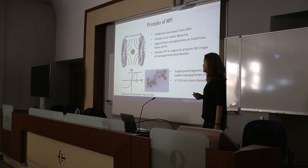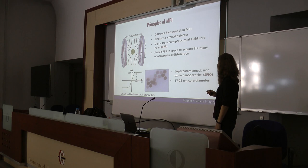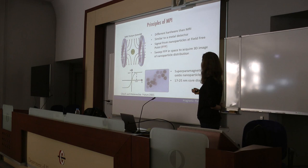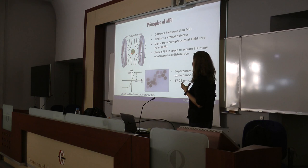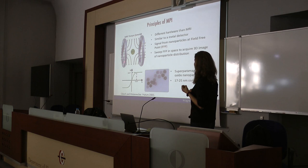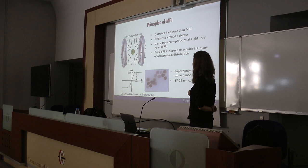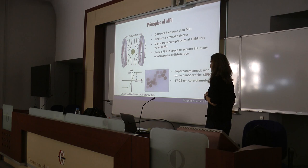I want to give a brief introduction to the principles of MPI. This is a schematic of a typical MPI scanner. The hardware is different from MRI — in MRI we have a large homogeneous static magnetic field, whereas in MPI we have a gradient-type magnetic field that ramps up linearly from one side of the scanner to the other. You can imagine two magnets facing each other with the same poles, creating a field-free point at the center of the scanner. We take signals only from nanoparticles at the field-free point, and by sweeping this field-free point in space we acquire 3D images of the nanoparticle distribution.